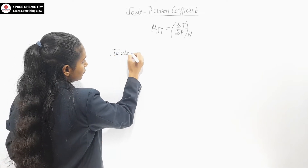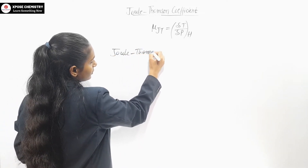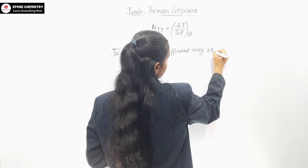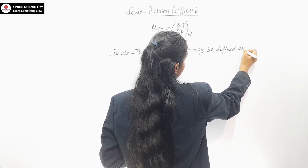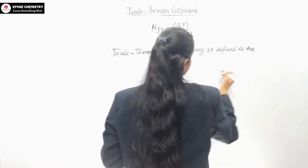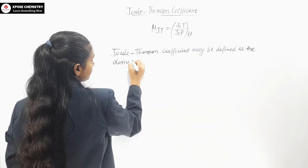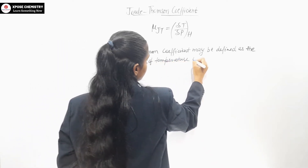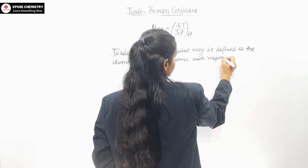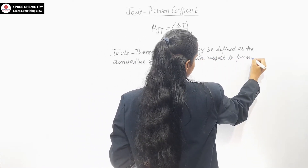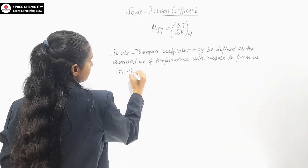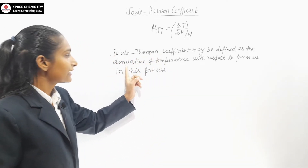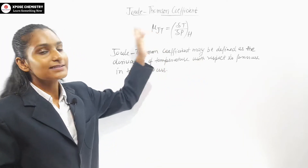The Joule-Thompson coefficient is defined as the derivative of temperature with respect to pressure at constant enthalpy in this process.